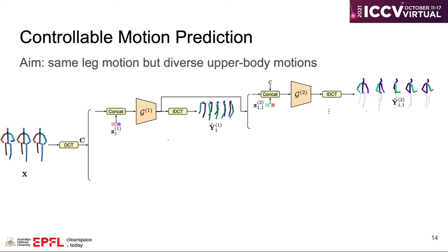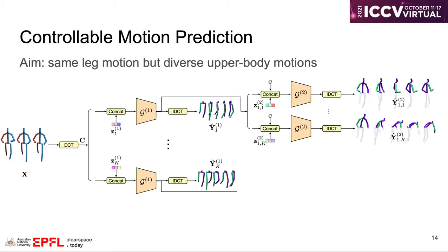During training, we will sample k different lower-body motions, and for each lower-body motion, k different upper-body motions are produced.